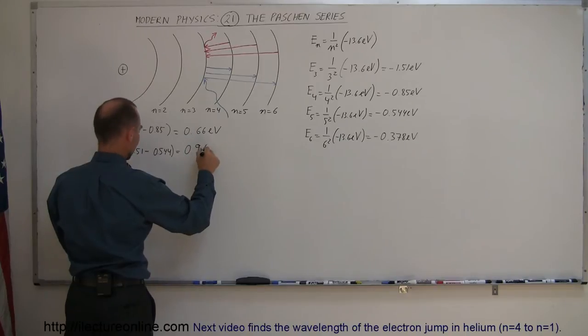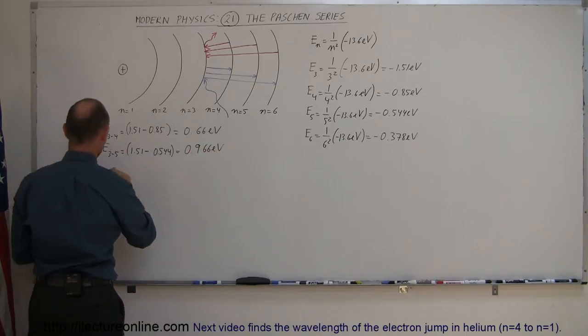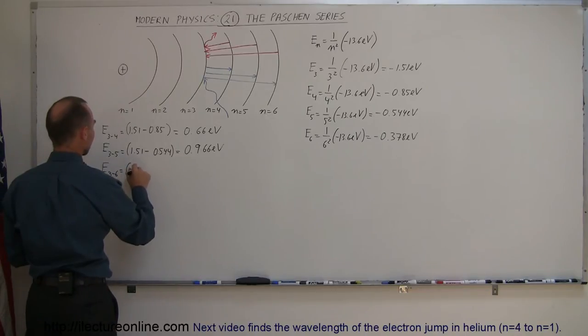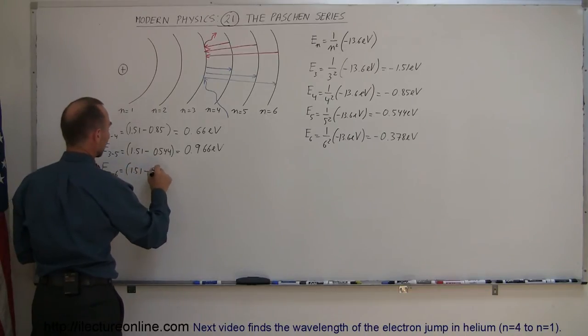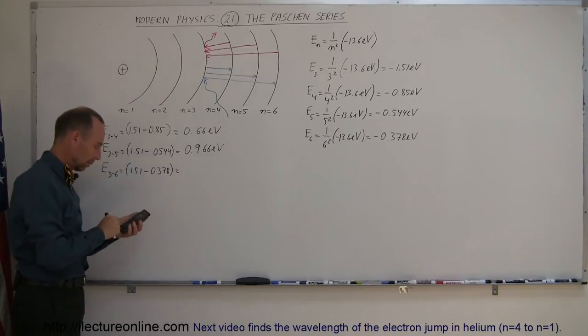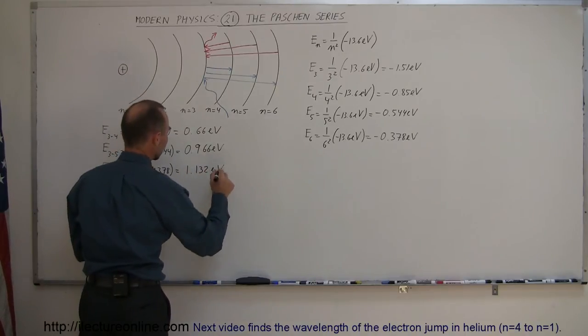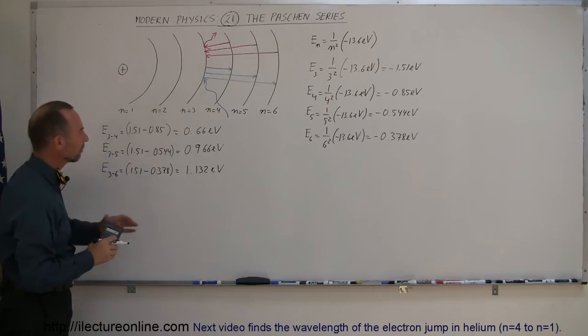The energy difference between 3 and 6 is 1.51 minus 0.378. That would be 1.132 electron volts.